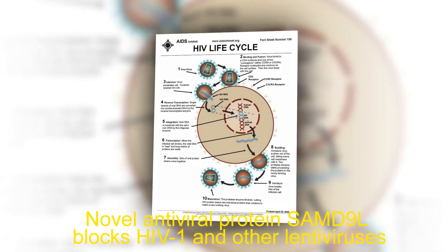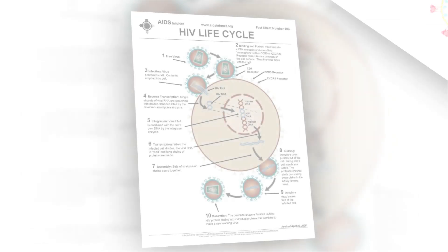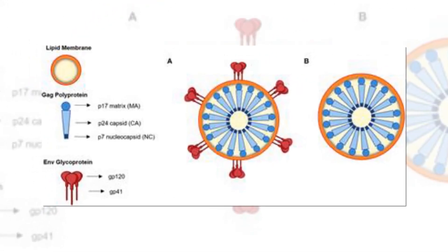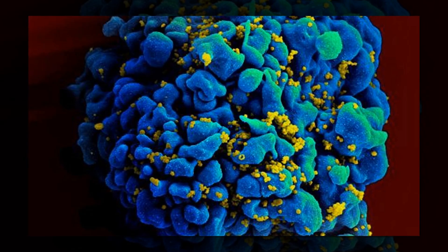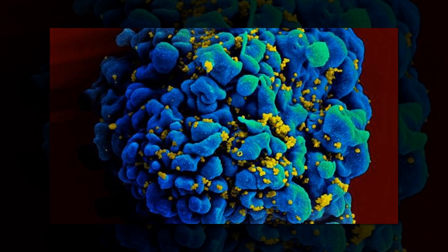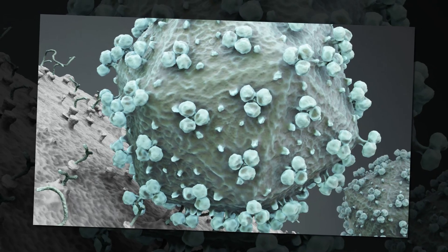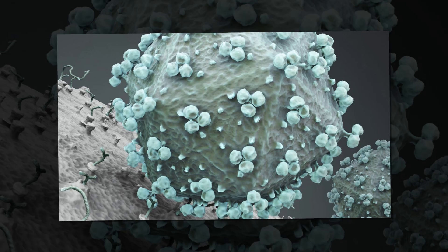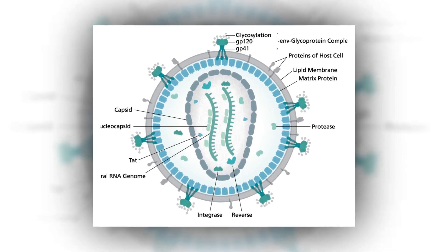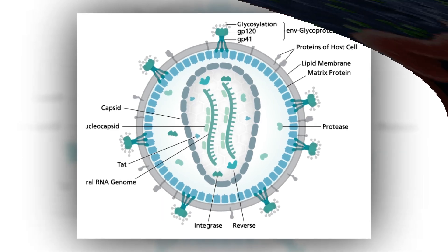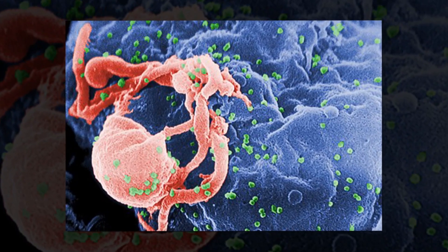Novel antiviral protein SAMD9L blocks HIV1 and other lentiviruses. In a recent study published in the journal PLOS Biology, researchers in France investigated the cellular function and antiviral role of human SAMD9L and its paralogue SAMD9 — short for sterile alpha motif domain-containing proteins 9 and 9-like — in HIV1 restriction. They found that interferon (IFN)-stimulated human SAMD9L inhibits HIV1 and primate lentiviruses in late replication phases, impacting viral translation and endosomal trafficking, while paralogue SAMD9 enhances HIV1 replication.